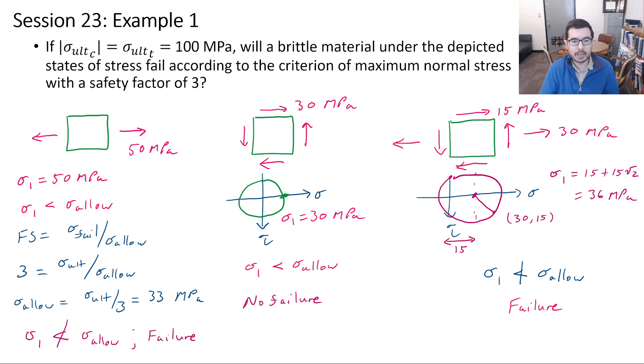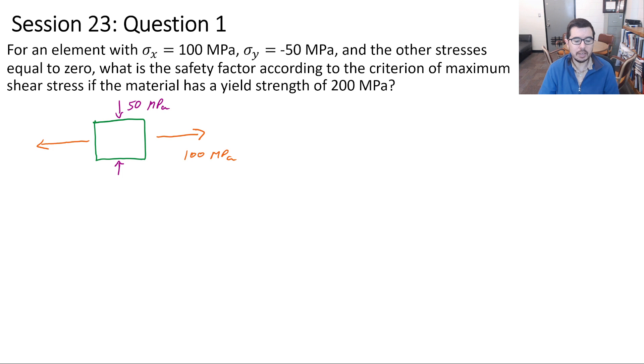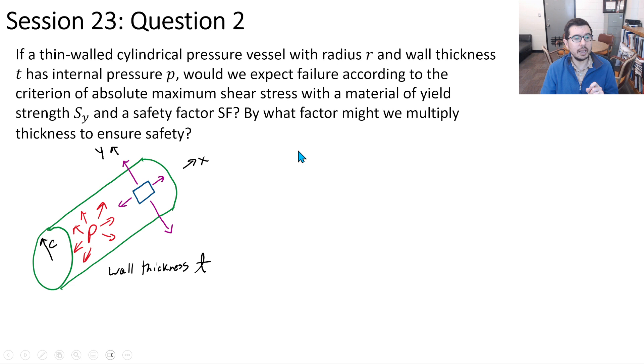Here's a question that you get to do for an assignment. We have an element with σ_x equals 100 megapascals, σ_y equals minus 50 megapascals, and the other stresses equal to zero. The question now is what is the safety factor according to the criterion of maximum shear stress, so not maximum normal stress but maximum shear stress - so that's Tresca - if the material has a yield strength of 200 megapascals. In this case we're asking what is the safety factor.